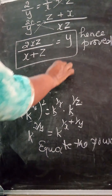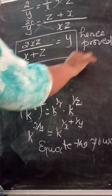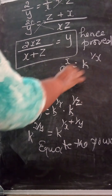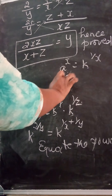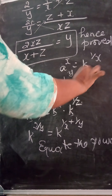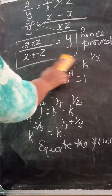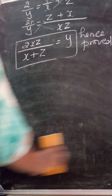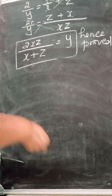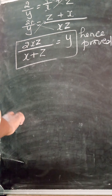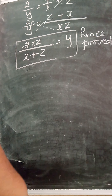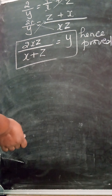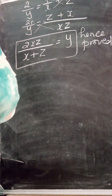The key concept to understand is: if a^x = k, then a = k^(1/x). Similarly b = k^(1/y) and c = k^(1/z). Once you understand that, you substitute into b² = ac and find LCM to complete the proof.